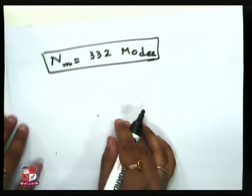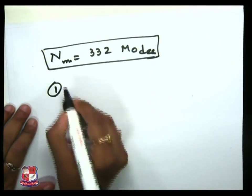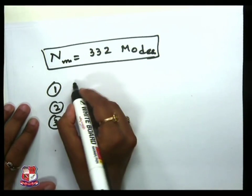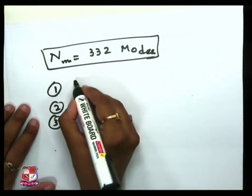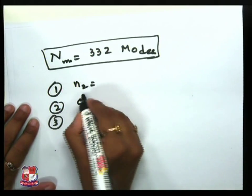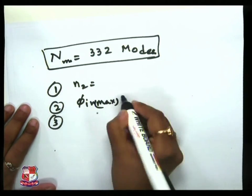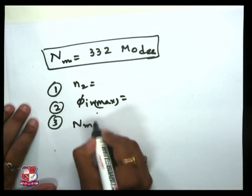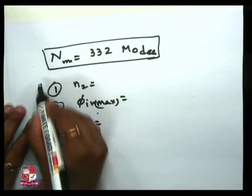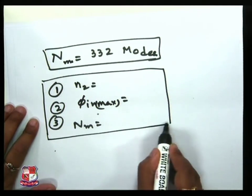To write the solution clearly, list the three results separately: first, n2 = 1.47; second, the acceptance angle φ_max = 15°; and third, the maximum number of modes = 332. Always write these down separately to highlight them.